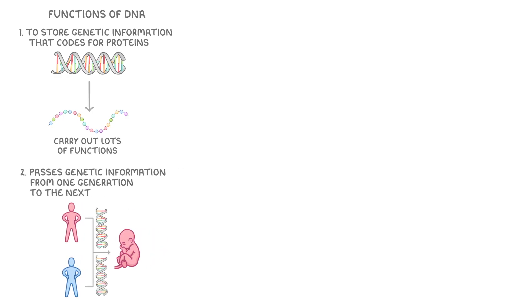Next, let's take a look at the functions of DNA. DNA's main role is to store genetic information that codes for proteins. And remember that proteins carry out lots of functions in our bodies, so this is really important. DNA is also important because it passes genetic information from one generation to the next. And it can do this because it's heritable.